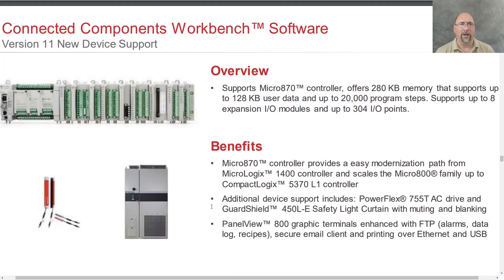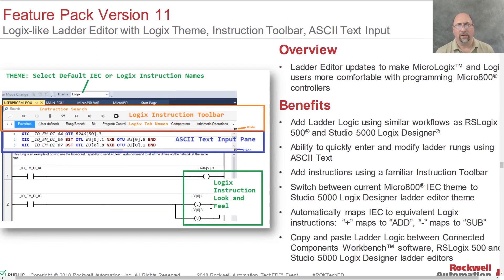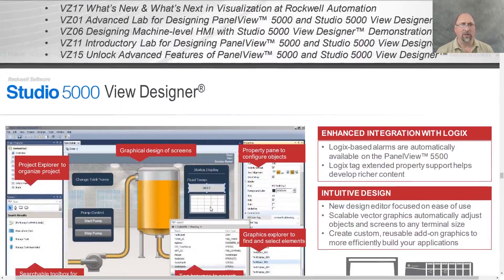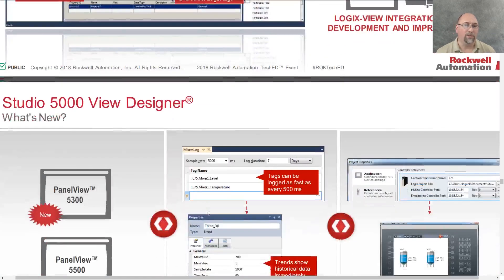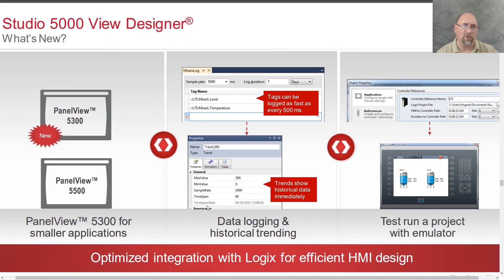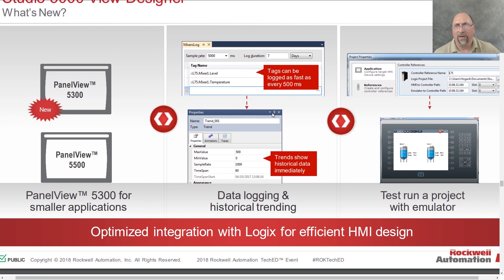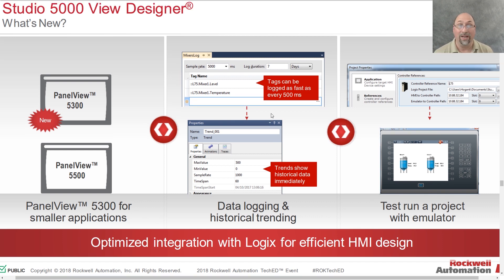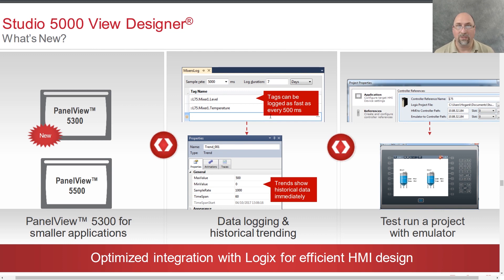I do want to get into the View Designer enhancements. In the previous hardware presentation we talked about the hardware, so I just want to touch on the tag logging - tags can now be logged as fast as every 500 milliseconds. That's extremely slow; I think it's 50 milliseconds in Panel View Plus 7, so I don't know what they're thinking. But at least it has data logging and historical trending now, since the product didn't even have that when it released. Test running a project is also new - that's huge. I just can't see myself trying this product without that feature.